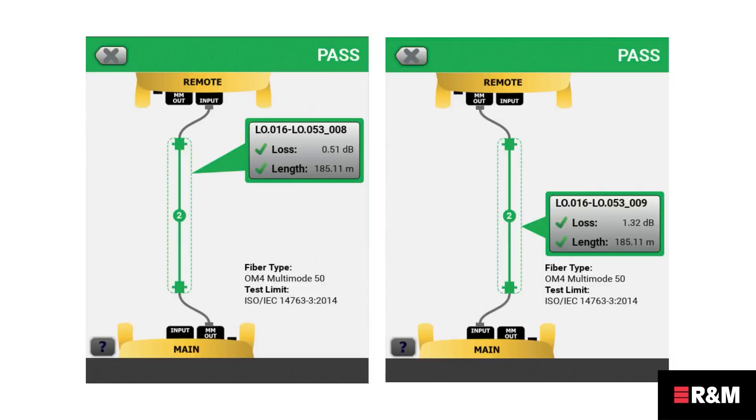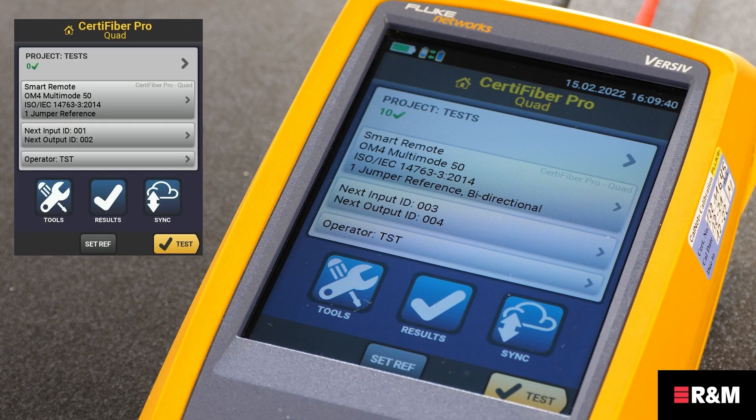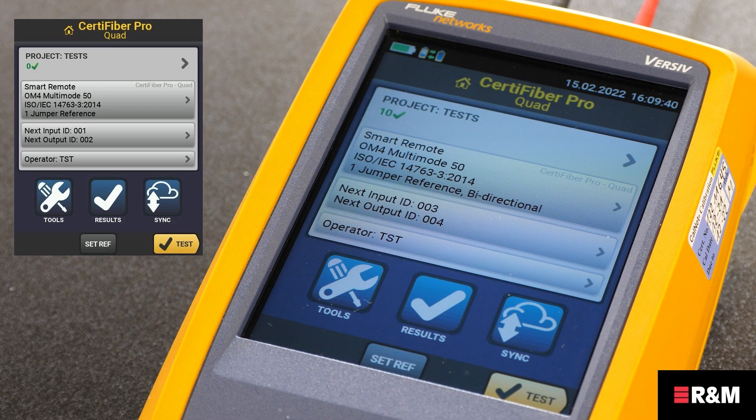Please note, the directions main to remote and remote to main in the bidirectional results are only the directions of the optical signals for the second half of the test. If a fiber fails, the direction does not tell you the location of the problem. With these specific testers, if auto-save is on and the tester is in smart remote mode, the tester uses the next two IDs automatically to save the results for the two fibers.